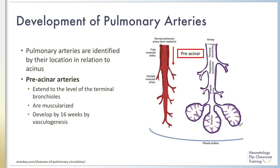Branches of the main pulmonary arteries are identified by location in relation to the acinus. The pre-acinar arteries are proximal to the terminal bronchioles and develop by 16 weeks via vasculogenesis, a process involving de novo organization of blood vessels after migration and differentiation of angioblasts or endothelial progenitor cells. In the figure in red, the pre-acinar arteries are shown as muscularized vessels that supply the airway to the level of the terminal bronchioles.